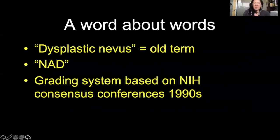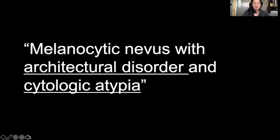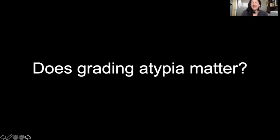A word about words: dysplastic nevus, Clark's nevus — kind of old terms. At the University of Washington, we use a grading system based on NIH consensus terminology, which is melanocytic nevus with architectural disorder and X degree of cytologic atypia. We use mild, moderate, and severe. Does this even matter? At some institutions, they don't do this at all — it's either benign or melanoma.